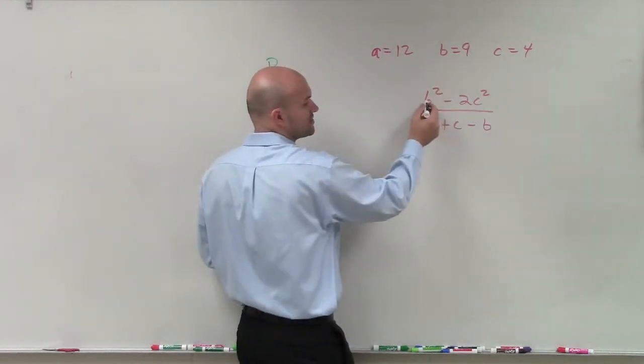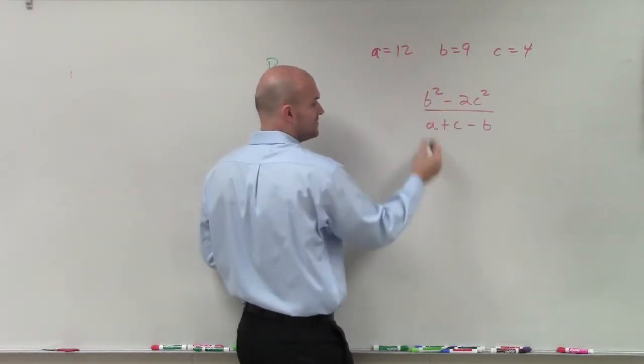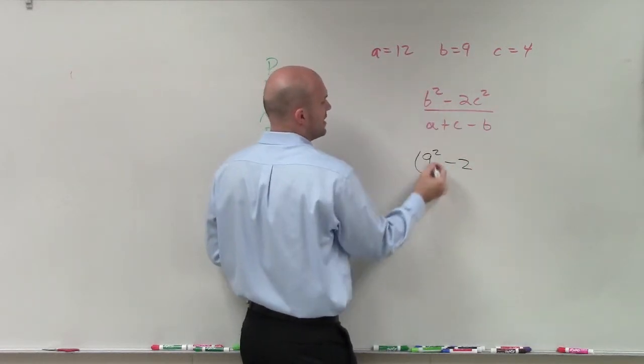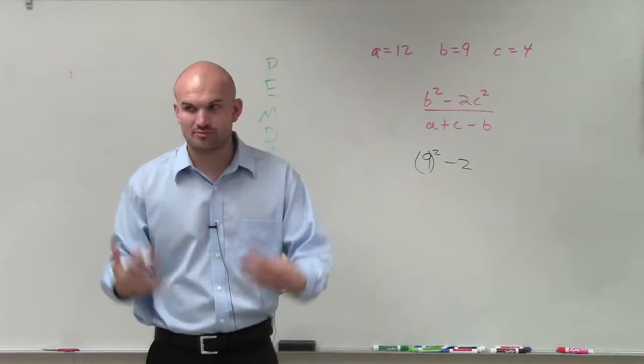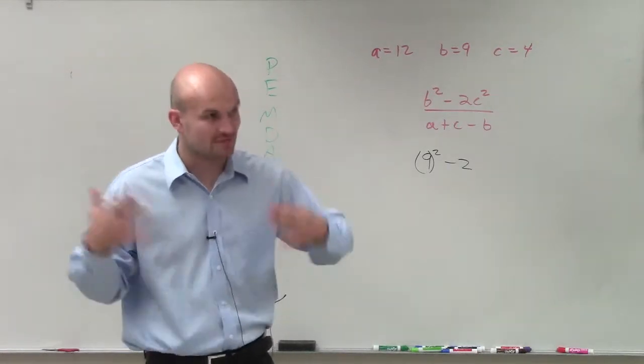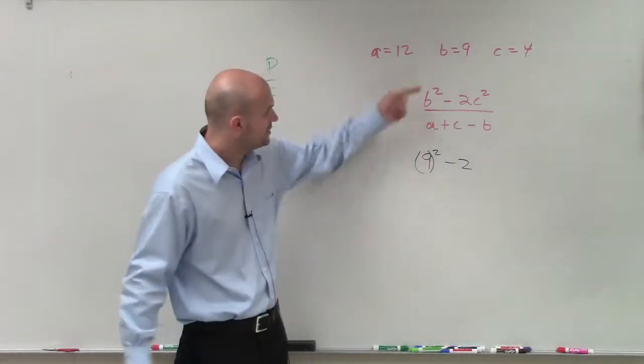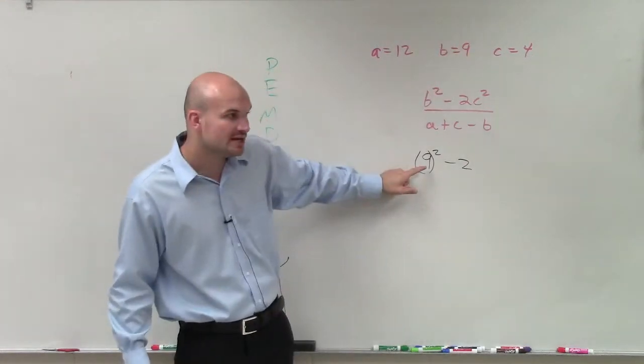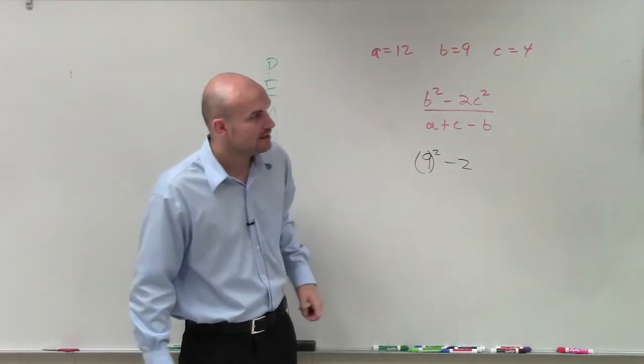So we see that B is worth 9. So we're going to plug in a 9 for the square. So it's going to be 9 squared minus 2. And whenever I'm plugging them in, I like to put parentheses around them so I can remind myself that's what I plugged in for that value, because we say 9 is equal to B. So I can replace the B with the expression 9.